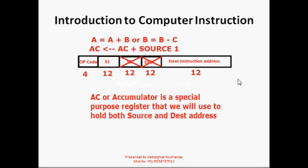This accumulator or AC register will work as source1 or source2. So in our previous instruction format where we had S1, S2, and destination, we are replacing S2 and destination — keeping only one source. The instruction format will now become: accumulator equals accumulator plus/minus or any operation with the source, or source1.